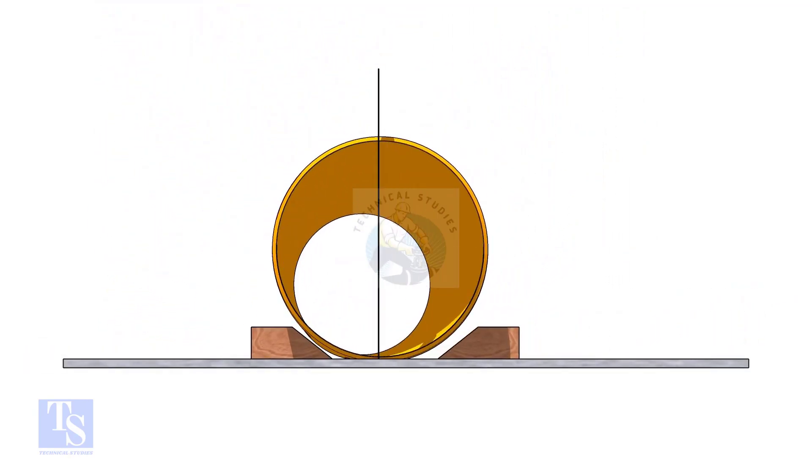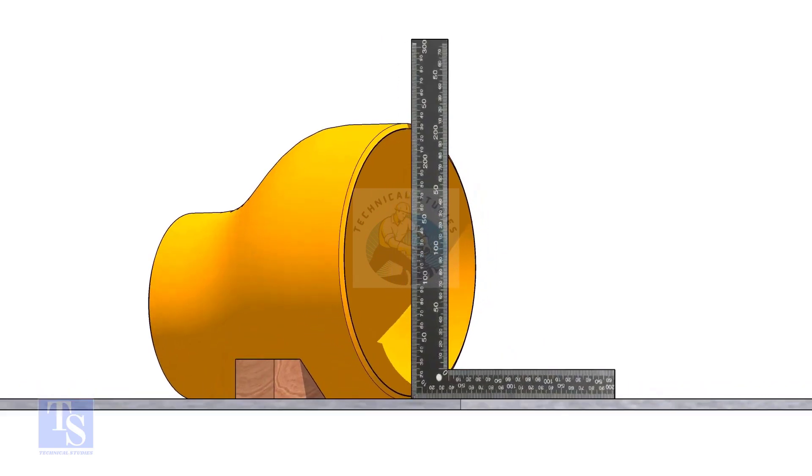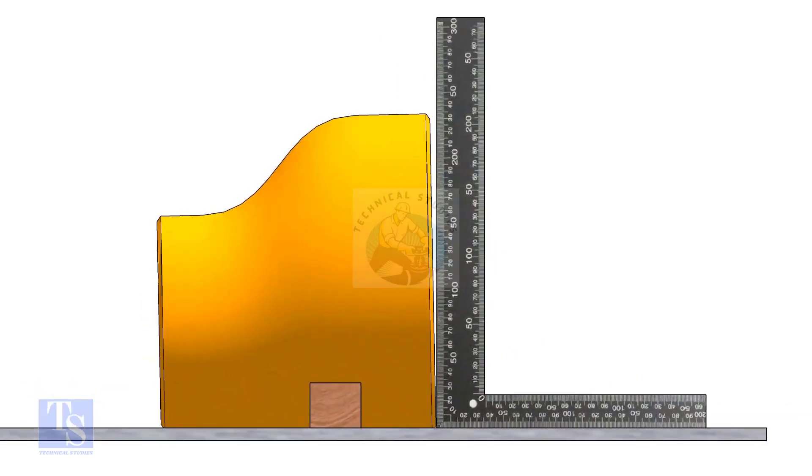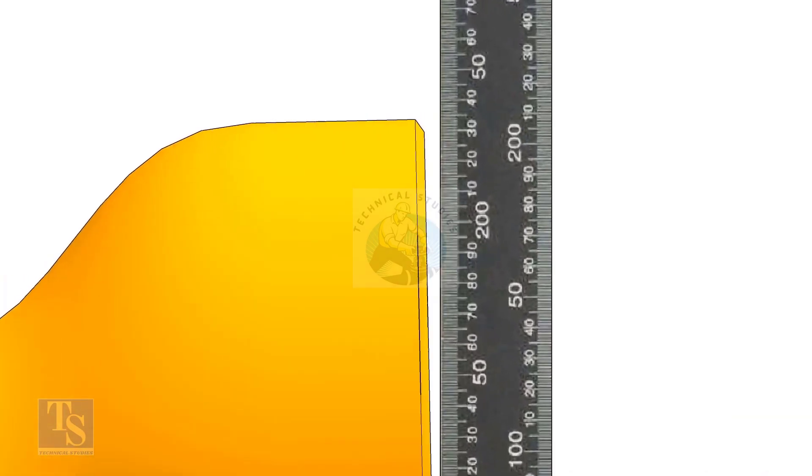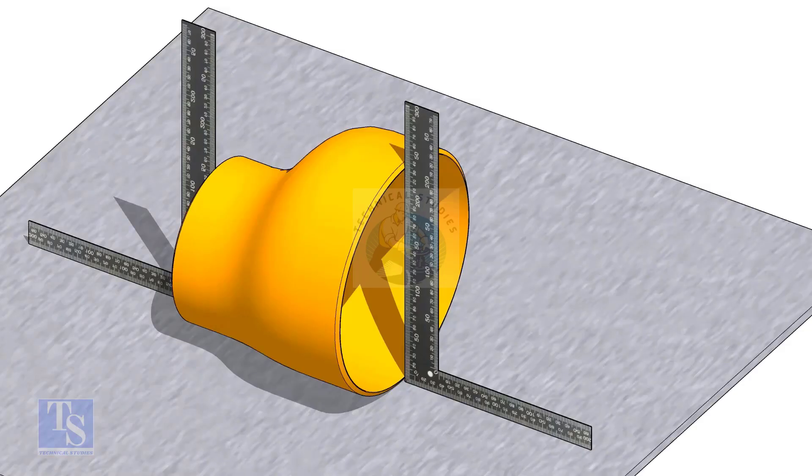Put the reducer on a level plate and check the squareness with a right angle. You will see a gap between the right angle and the reducer. Slowly rotate the reducer clockwise and anti-clockwise.